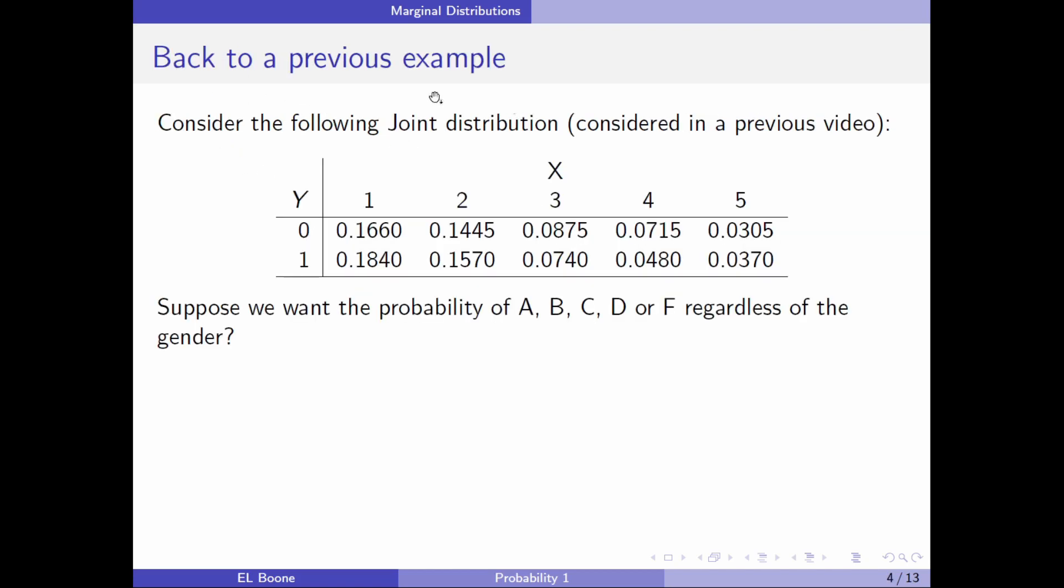We're basically getting rid of one of the variables by averaging it out, is essentially what we're going to do. So let's go back to a previous example. This is the one where we had the grades. I know this was A, B, C, D, F, and this was male, female. So we want to look at the, get the distribution of just x without regard to y. So we want to get rid of y, just look at x.